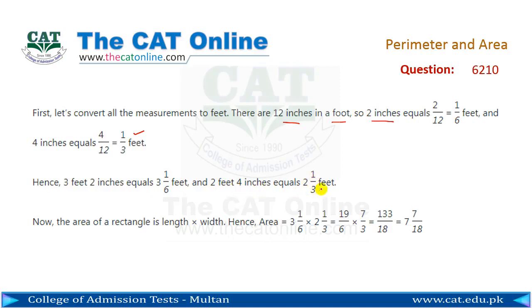Now we have to multiply. Converting to improper fractions: 19/6 multiplied by 7/3, which equals 133 over 18.